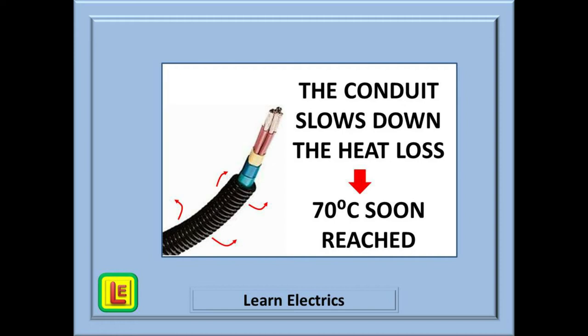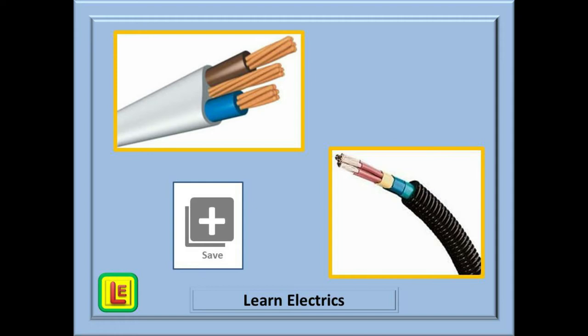For most PVC domestic cables this limit is 70 degrees centigrade, and above this temperature the cable will begin to soften and degrade. Here we have PVC singles installed in plastic conduit. Plastic is a poor conductor of heat. That is why many cooking utensils are made of plastic or at least have plastic handles.